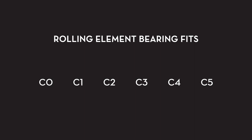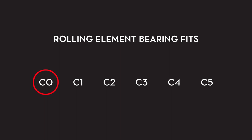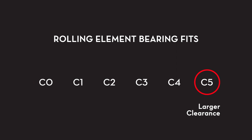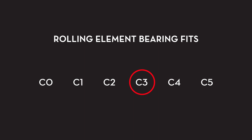Rolling element bearing clearances, or FITs, are classified from C0 to C5. C0 FITs exhibit very small internal clearances and C5 FITs are much looser. Most machines in industrial manufacturing utilize C3 FITs.